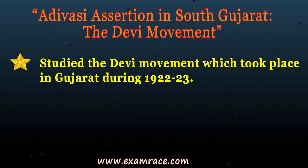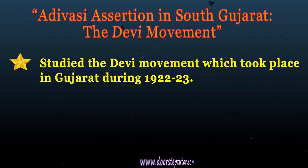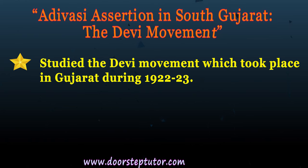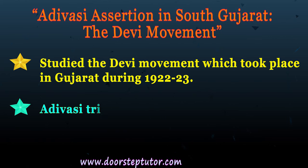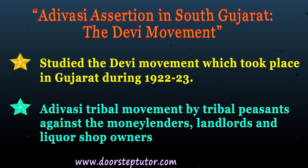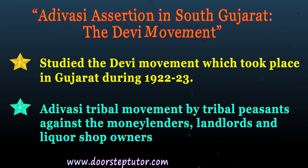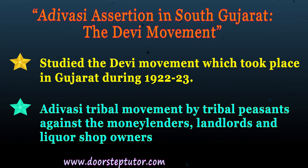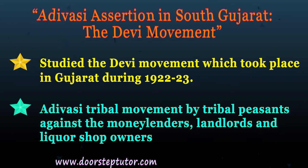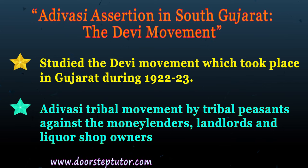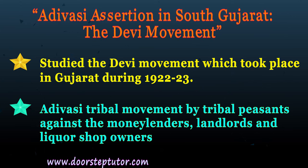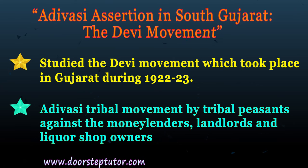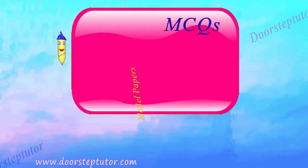In the years 1922 and 1923, the Devi movement took place in Gujarat. A lot of landlords, liquor shop owners, and moneylenders — the influential and powerful people of rural society — started manufacturing a large amount of liquor and distributing it among the tribals. In order to curb that and raise their voice, the tribals started a movement known as the Devi movement.